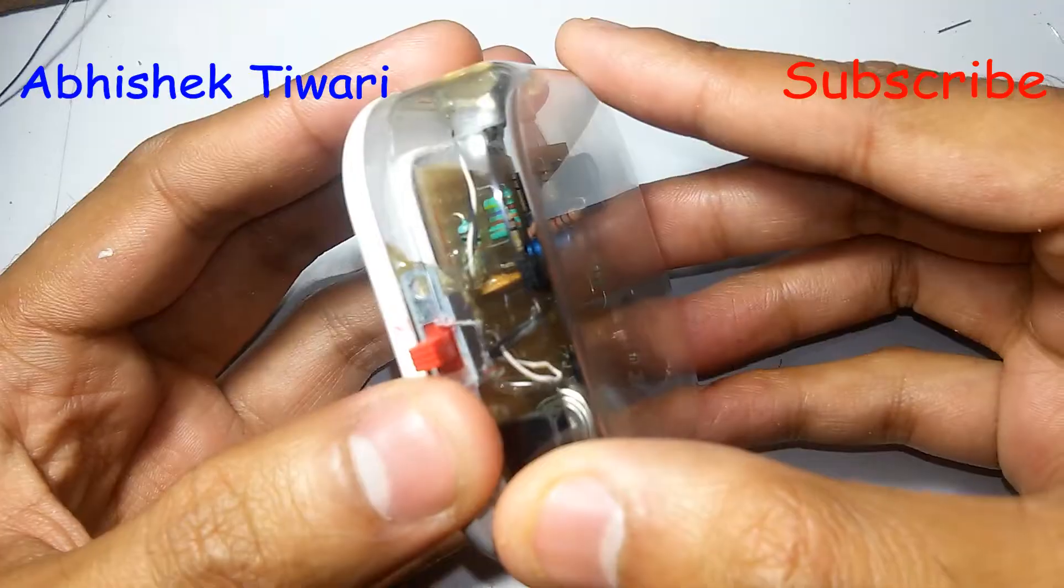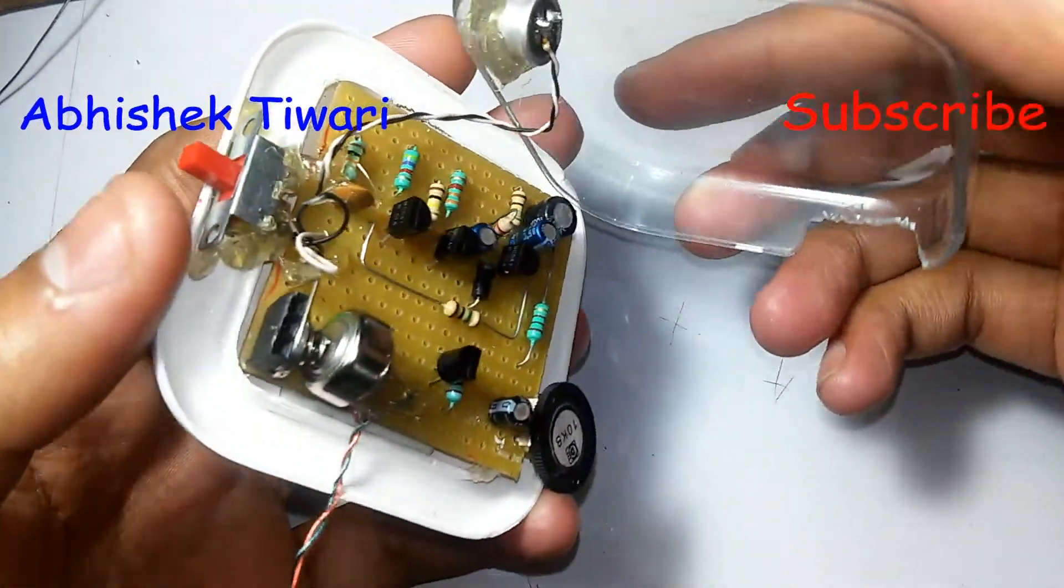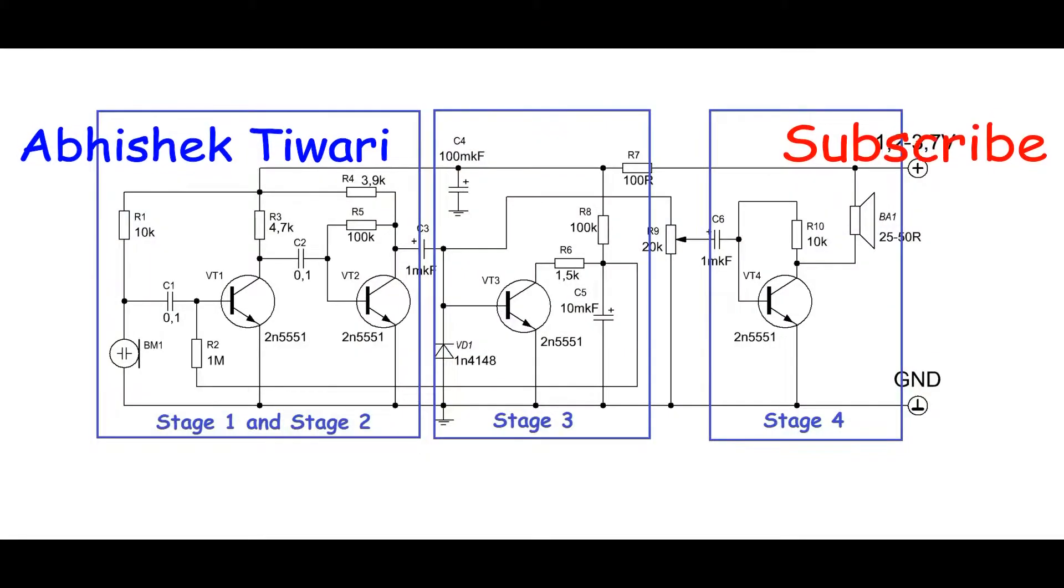With the help of transistors, we made an amplifier. This amplifier works on 1.5 volts and has 4 stages.